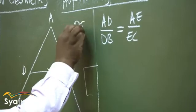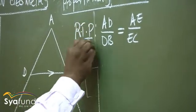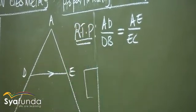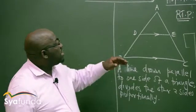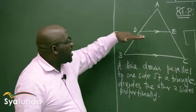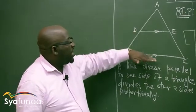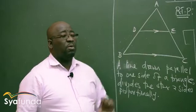This is what this theorem is saying and we need to prove that. So this becomes our required to prove. We want to prove: is it true that if one line is drawn parallel to one side of a triangle, it will divide the other two sides proportionally?